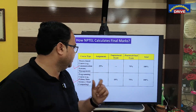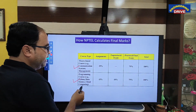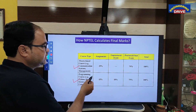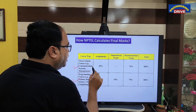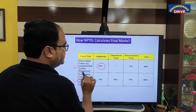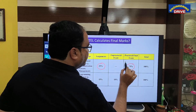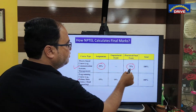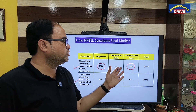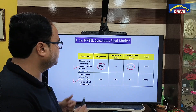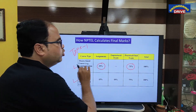When we talk about theory-based courses — like Communication Systems, Management — the first component is assignments, which carry 25% weightage. The proctored exam, which is the final exam you write at the center, carries 75%. So 25% plus 75% equals 100%. Most courses fall under this category, which we can call Type 1.